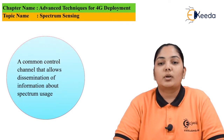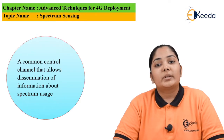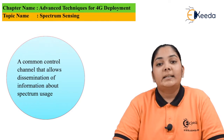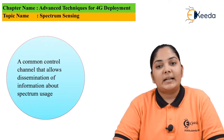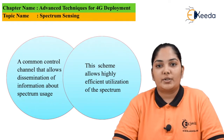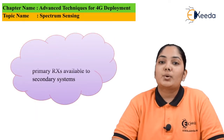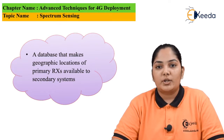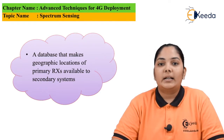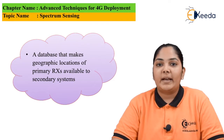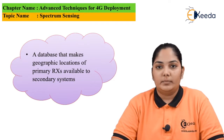The next solution is to use a common control channel which will give information about the spectrum being used — for example, it will tell us where the received frequency is being used. This gives a very high spectrum utilization efficiency. The last solution is to have a database which provides the geographical locations of all the primary receivers that are available. Thus, spectrum sensing becomes possible.